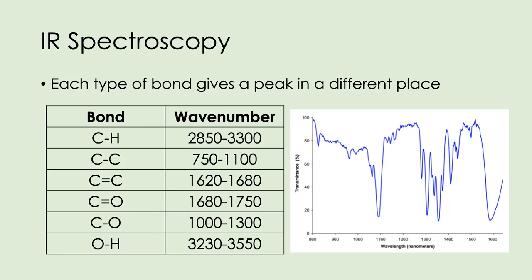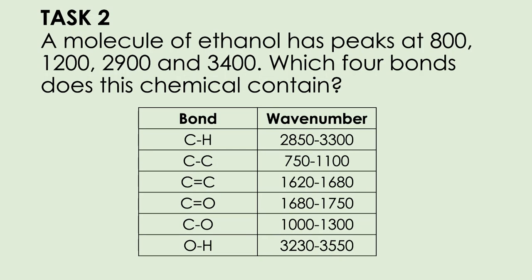Lastly, IR spectroscopy. The IR spectra looks quite complicated with lots of peaks, but all you need to do is read off where particular bonds appear. You'll be given a table showing the bond and the wave number, and you read off where the peak is to identify what bond it corresponds to. For the last task, look at that table of bonds and wave numbers — a molecule of ethanol has peaks at 800, 1200, 2900, and 3400. Identify which four bonds that chemical contains by reading from the table.